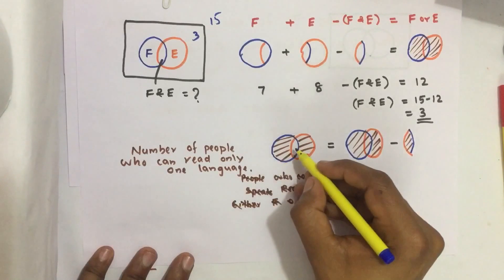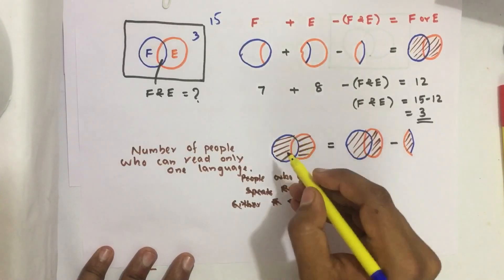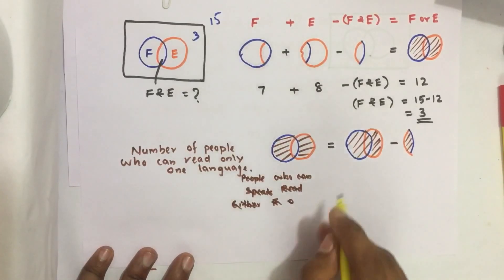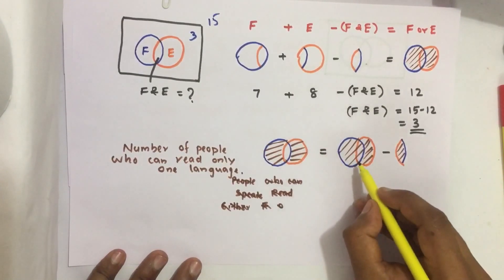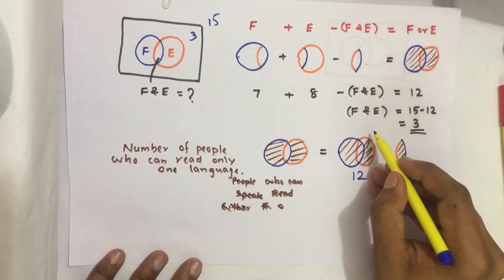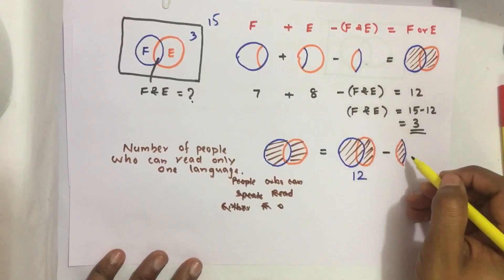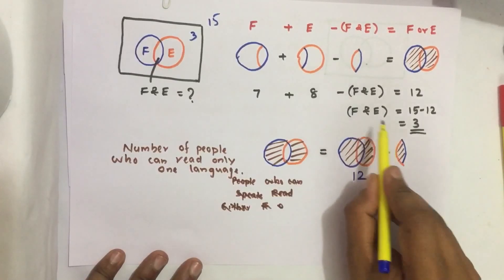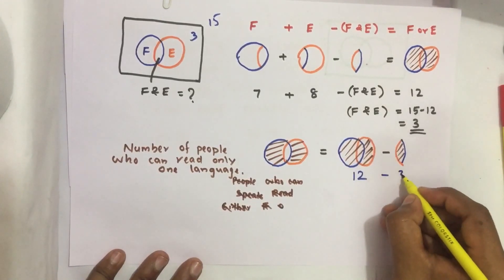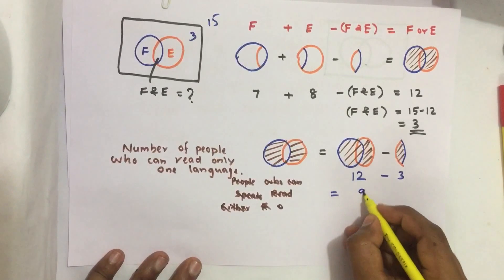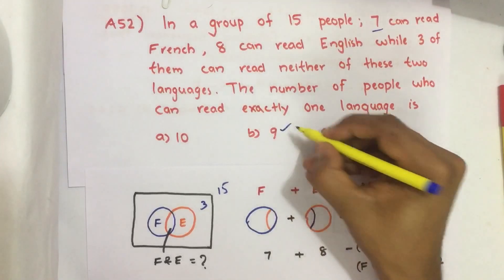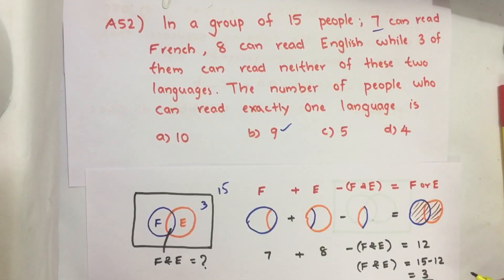The number of people who can read only one language means people who can read only French plus people who can read only English. The total area is 12, and people who can read both is 3, so: 12 minus 3 equals 9. This is our required answer, and option B is the correct answer.